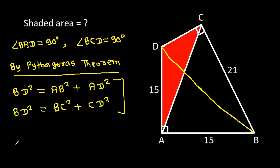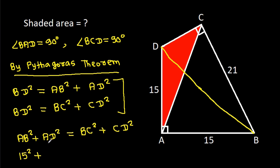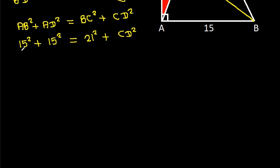From these two equations, we can say that AB squared plus AD squared equals BC squared plus CD squared. So 15 squared plus 15 squared equals 21 squared plus CD squared, which gives us 225 plus 225 equals 441 plus CD squared.